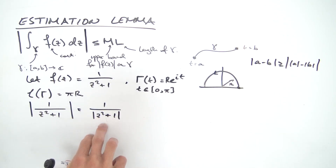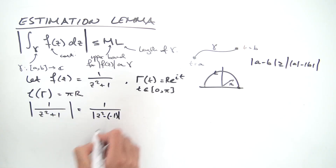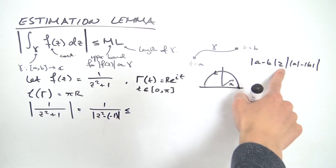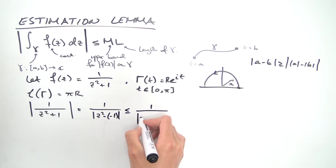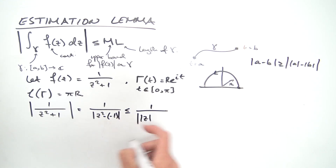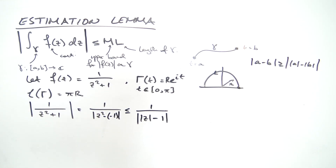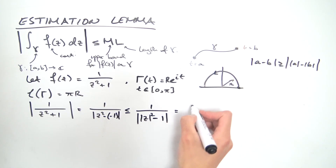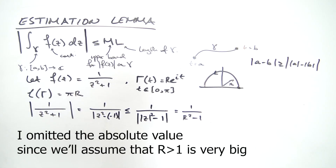Rewriting z² + 1 as z² - (-1) and applying the reverse triangle inequality, since this is in the denominator we get that |f(z)| is less than or equal to 1 over (|z²| - |1|) = 1/(r² - 1), since on the semicircle |z| = r. So we've found an upper bound M = 1/(r² - 1).